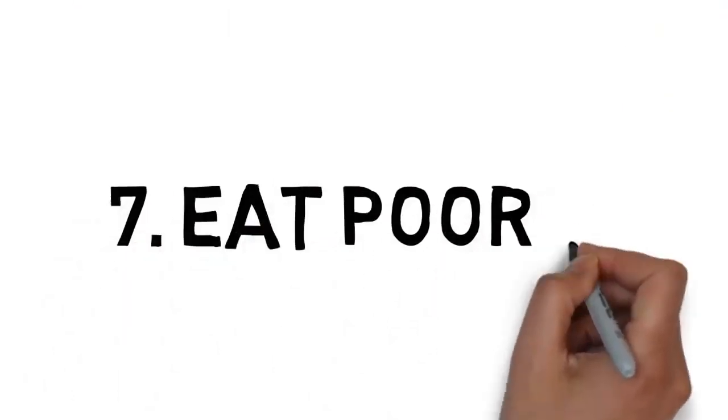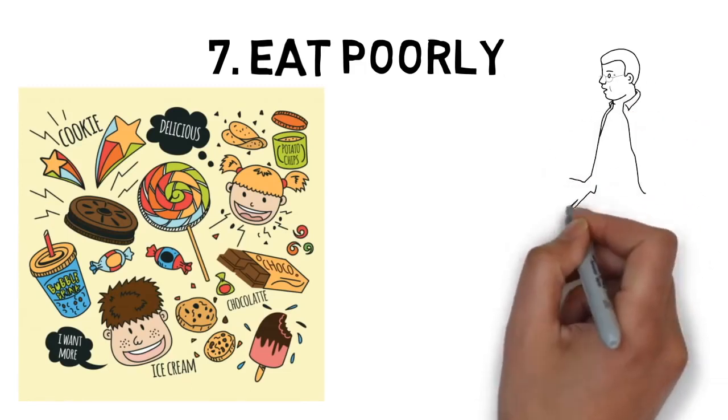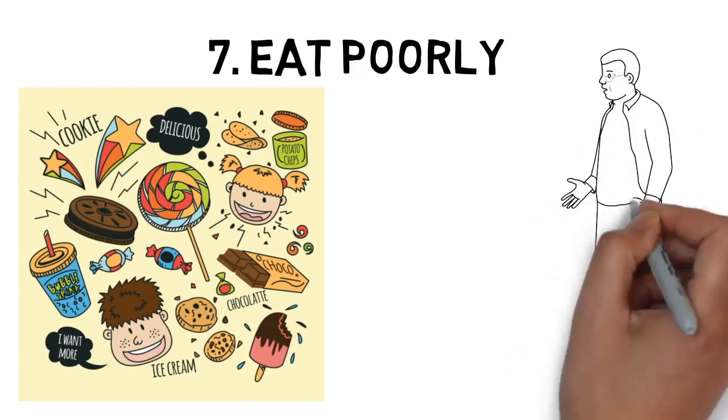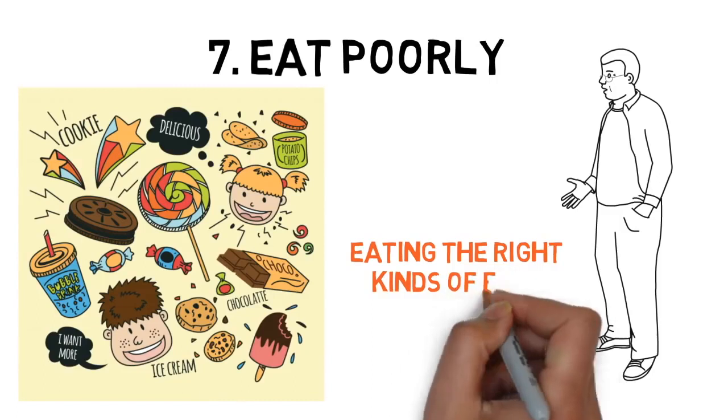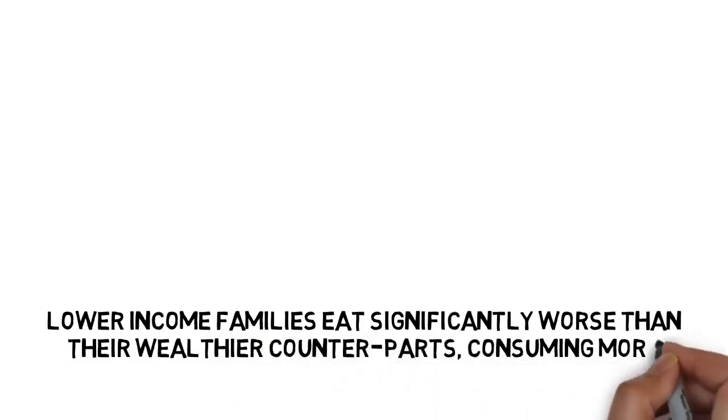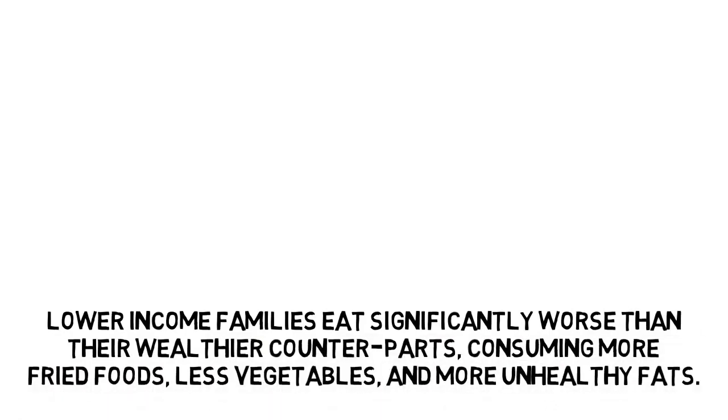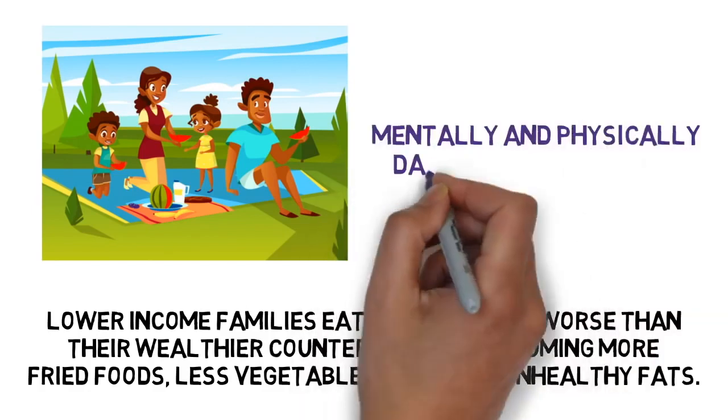7. Eat poorly. No matter what your goals are in life, there is one thing that is absolutely essential on your path to success: Physical health. Now I'm not saying you have to eat only the freshest ingredients or cut all carbs out of your diet, but it's crucial that you keep your body and mind healthy by eating the right kinds of food. On average, lower income families eat significantly worse than their wealthier counterparts, consuming more fried foods, less vegetables, and more unhealthy fats. Paired with little to no exercise, this kind of diet can lead to a number of mentally and physically damaging effects like obesity, stress, and poor sleep quality.